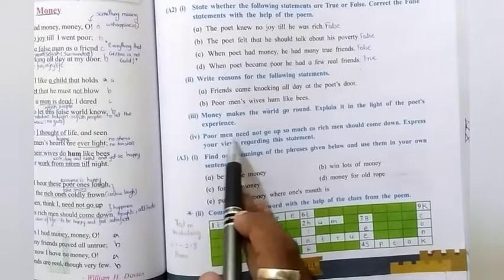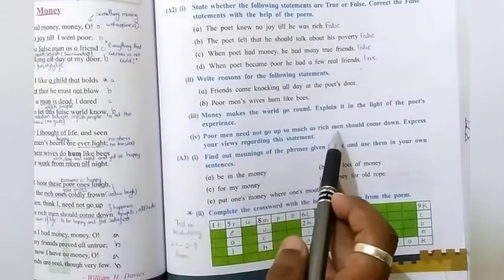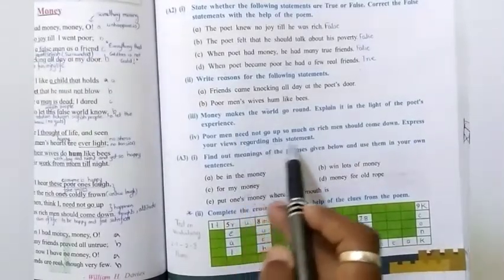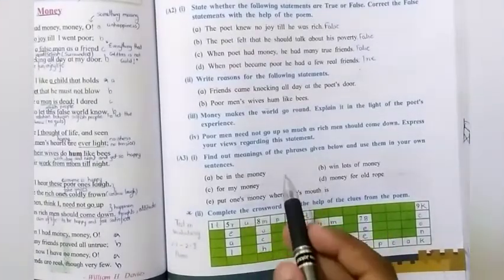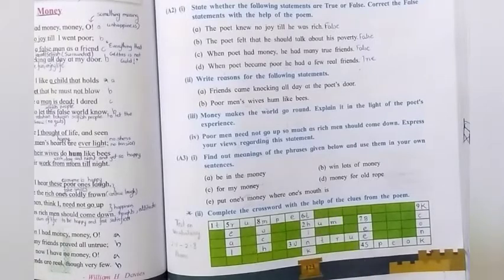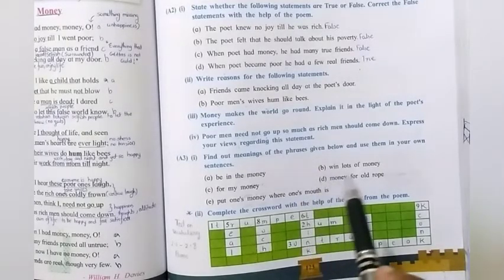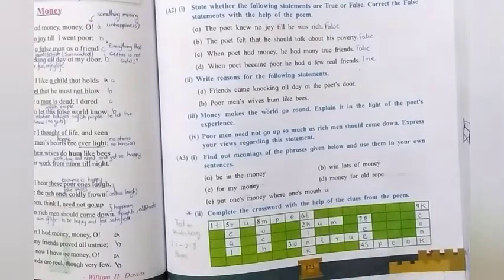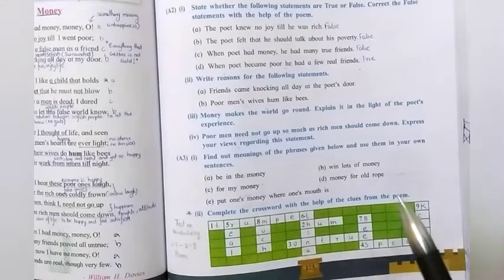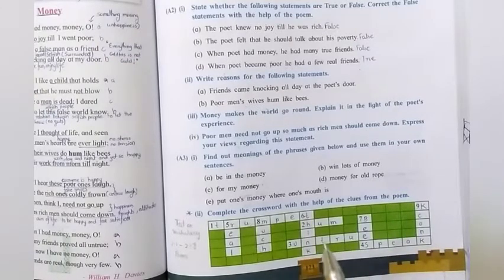Now, let us see the next one. Fourth one. Poor men need not go up so much as rich men should come down. Express your views regarding this statement. Now, what is this answer to this particular statement? The answer to this particular statement is this such as, see, this statement is true and makes a lot of sense. Why it makes sense? Because the poor people will be able to survive the hardships of life. They live simply surrounded by the loved ones. Okay, they have a very simple life. So, they will just face all the problems as they are. They have minimum requirements.